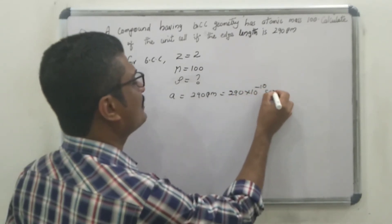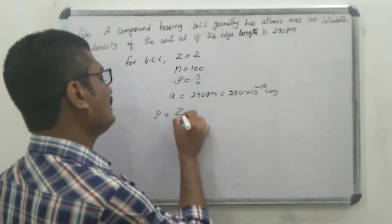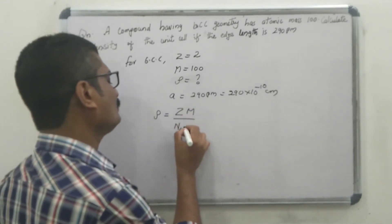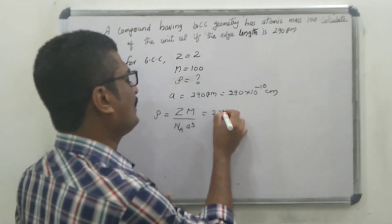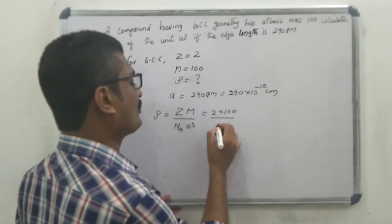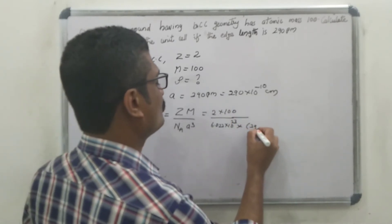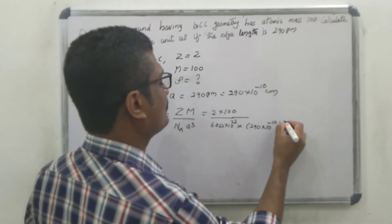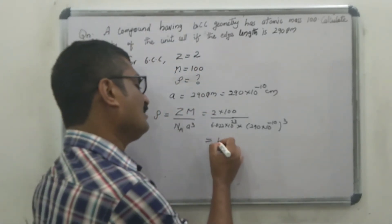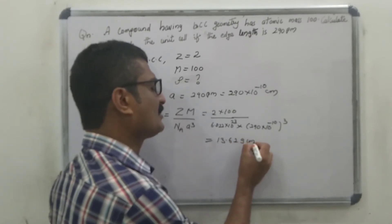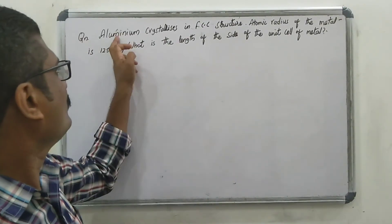The edge length A is 290 picometer, which means 290 into 10 raised to minus 10 centimeter. The density formula is rho equals Z into M divided by N_A into A cube. Substituting: Z is 2, M is 100, N_A is 6.022 into 10 raised to 23, and A is 290 into 10 raised to minus 10 centimeter, all cubed. The answer is 13.62 gram per centimeter cube.